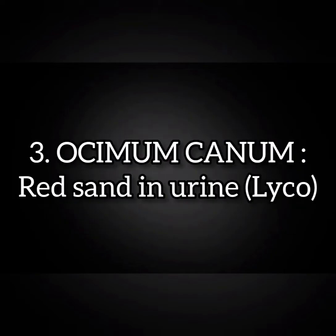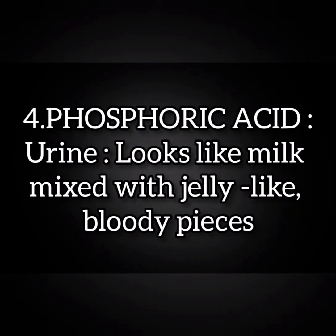Osimum Canum: they have red sand in urine. Lycopodium also has red sand in urine. Phosphoric acid: urine looks like milk mixed with jelly-like pieces, and they have bloody pieces in urine.